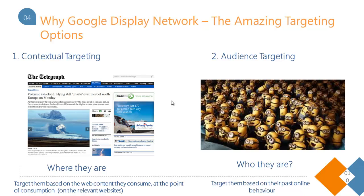There are two major targeting options in Google Display Network. The first is contextual targeting and the second is audience targeting. By contextual targeting, I mean you will be able to target people based on where they are, what websites they're on, what kind of content they're consuming. You will target them at the point of consumption — on websites relevant to what you have to offer.